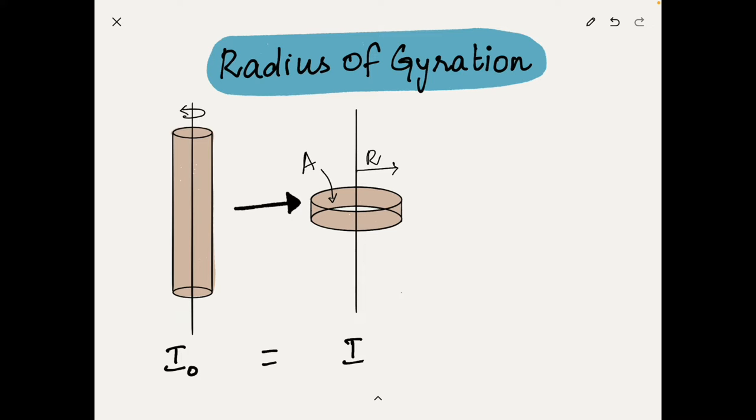Also remember, here as well the area moment of inertia for both the variants must be same. If we follow the same procedure as discussed in previous section to calculate the radius of gyration,